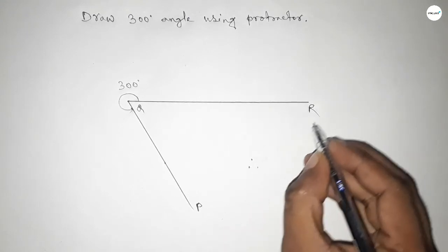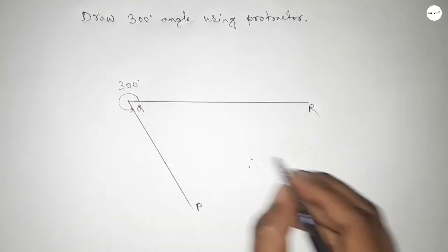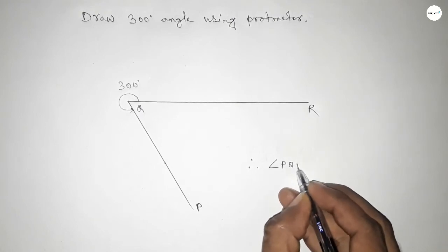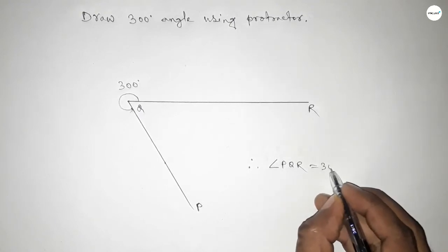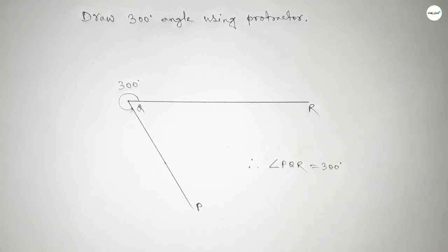Therefore, angle PQR equals, we can write, 300-degree angle. That's all. Thanks for watching. If this video is helpful to you, then please share it with your friend. Please like the video. Thanks for watching.